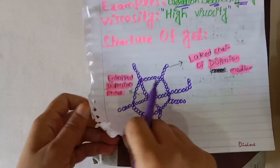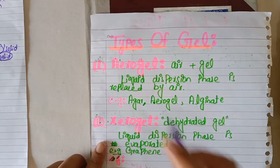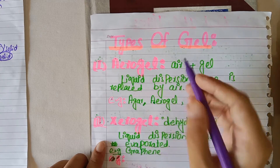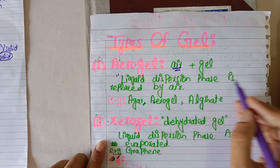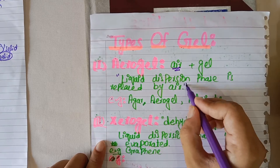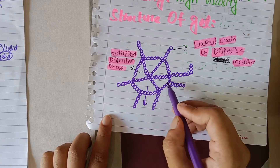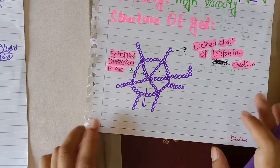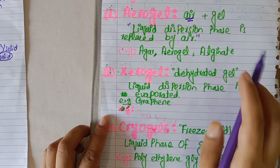The basic classification of gel includes aerogel, xerogel, and cryogel. Aerogels are gels in which the liquid dispersion phase is replaced by air. The liquid phase trapped by the locked chains of dispersion medium is replaced by air, so these gels are termed aerogels. Examples include agar aerogels and alginate aerogels.